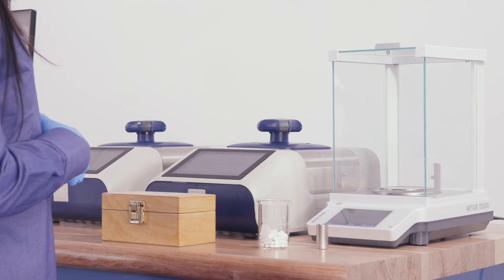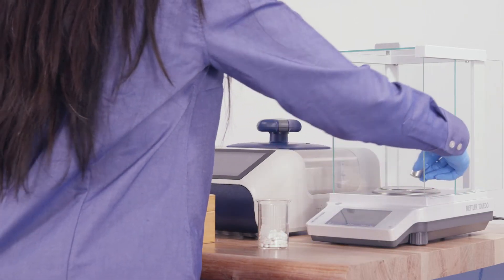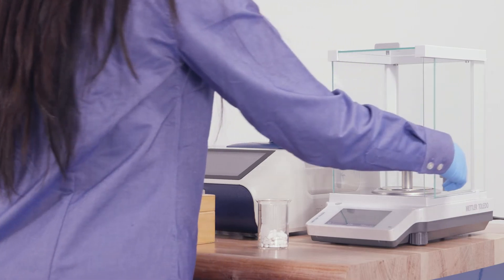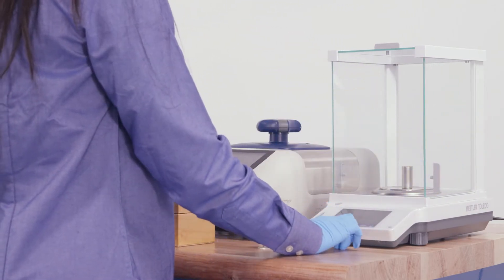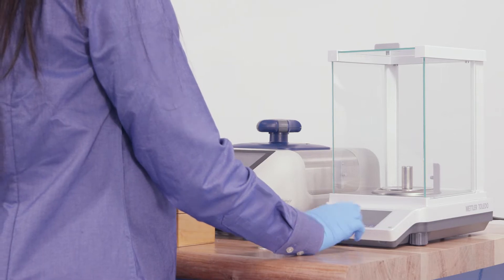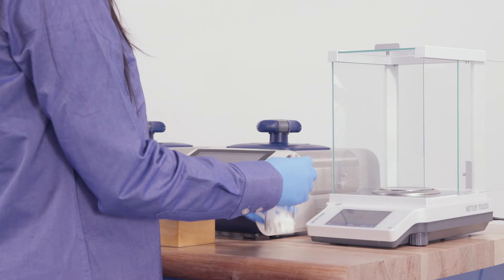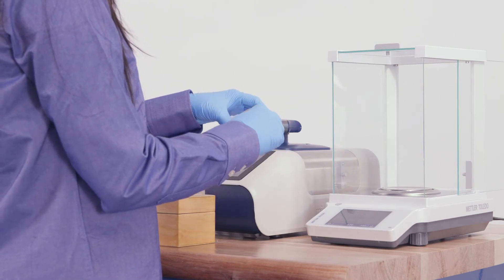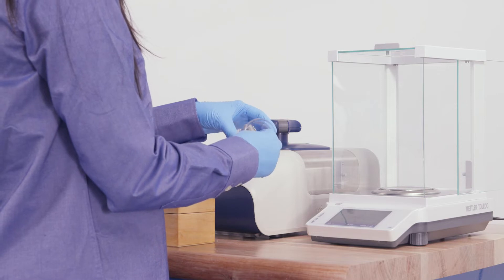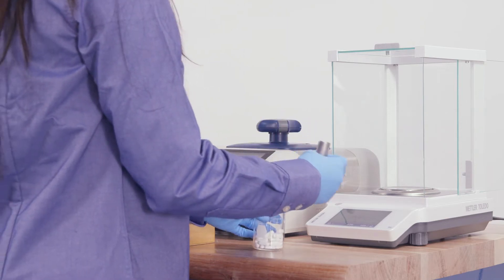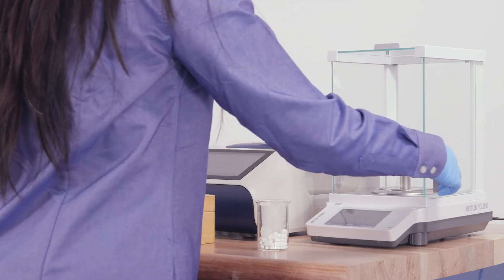But first let's start by loading the sample. We'll place the chamber on the balance and tare the balance, and then put the sample into the cup and weigh the sample.